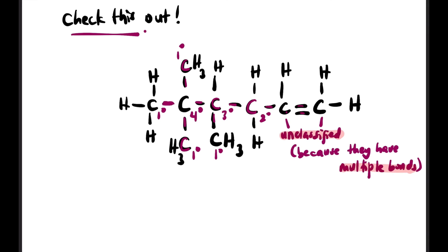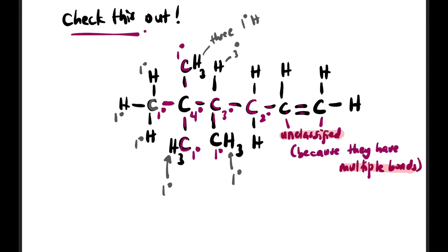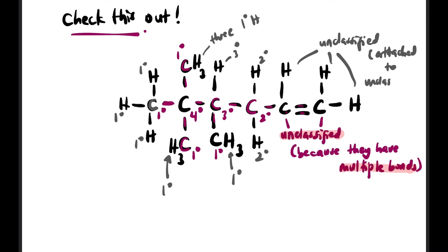Now for hydrogen classification: the 3 hydrogens at the end are all primary because they're attached to a primary carbon. The hydrogen on a tertiary carbon is a tertiary hydrogen. Secondary carbons give secondary hydrogens. And the hydrogens attached to unclassified carbons are also unclassified — we cannot classify them either.